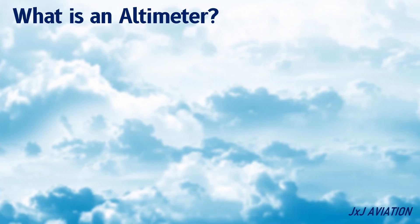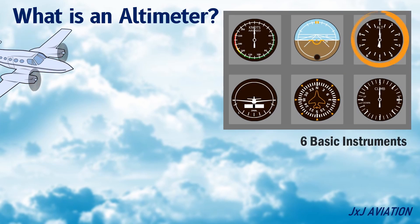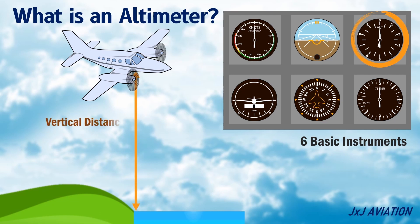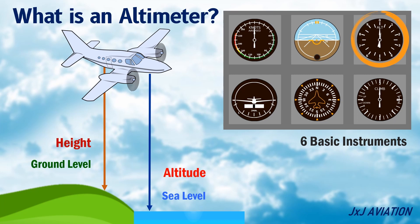What is an altimeter? An altimeter is one of the six basic instruments in an aircraft. It provides the vertical distance of an aircraft above a particular level. The vertical distance may be measured from sea level or ground level. If it is measured from mean sea level, it is called altitude. And if it is measured from ground level, it is called height.